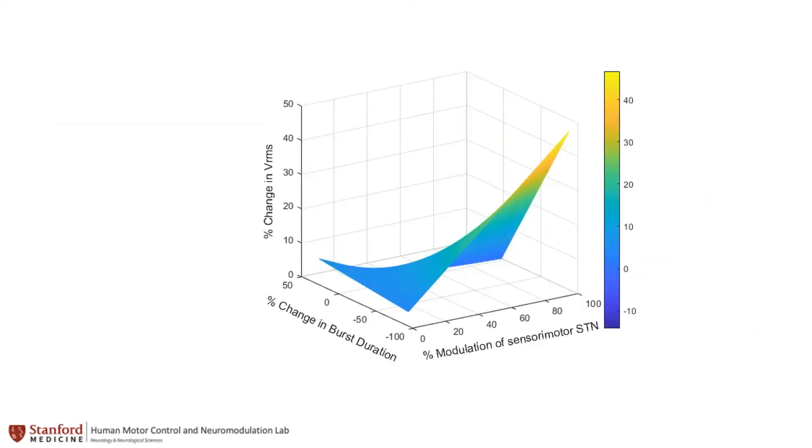Then, when looking at the 3D interaction between these three domains, we see that improvement in bradykinesia hinges on shortening of beta bursts alongside modulation of the sensory motor portion of the STN.